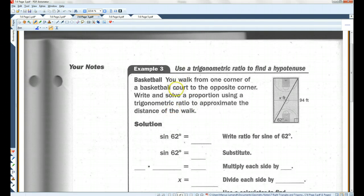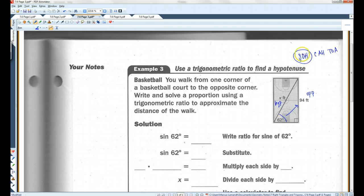You walk from one corner of a basketball court to the opposite corner. Write and solve a proportion using a trigonometric ratio to approximate the distance of the walk. So this is our situation. You walk from here to here. This is 62 degrees. The opposite side is 94 feet. We're looking for this one. So this one is the opposite side, and we know that x is the hypotenuse of our right triangle. Opposite and hypotenuse, you're going to use sine.